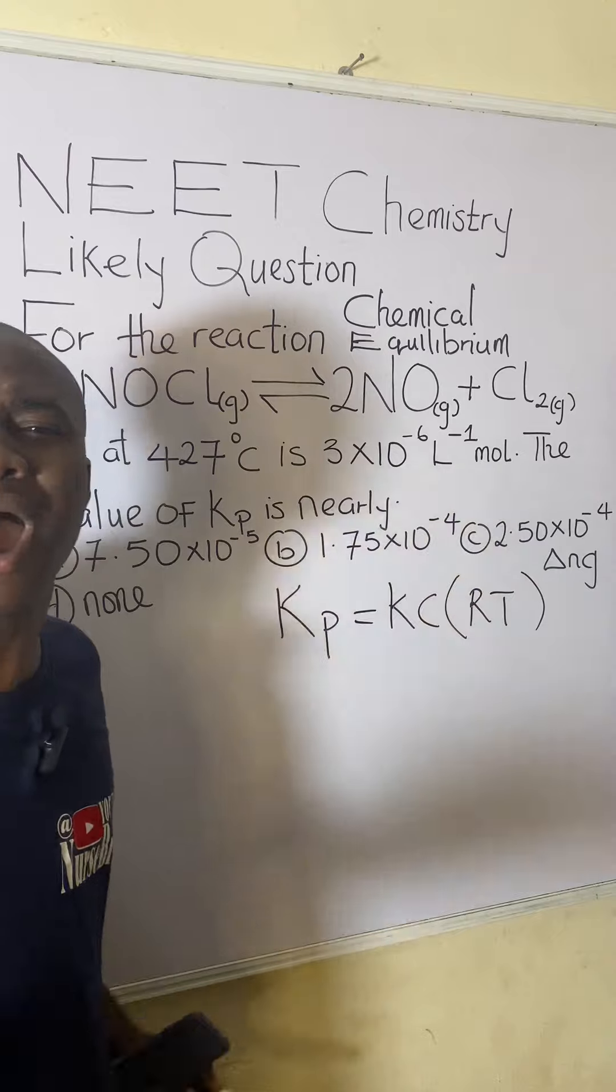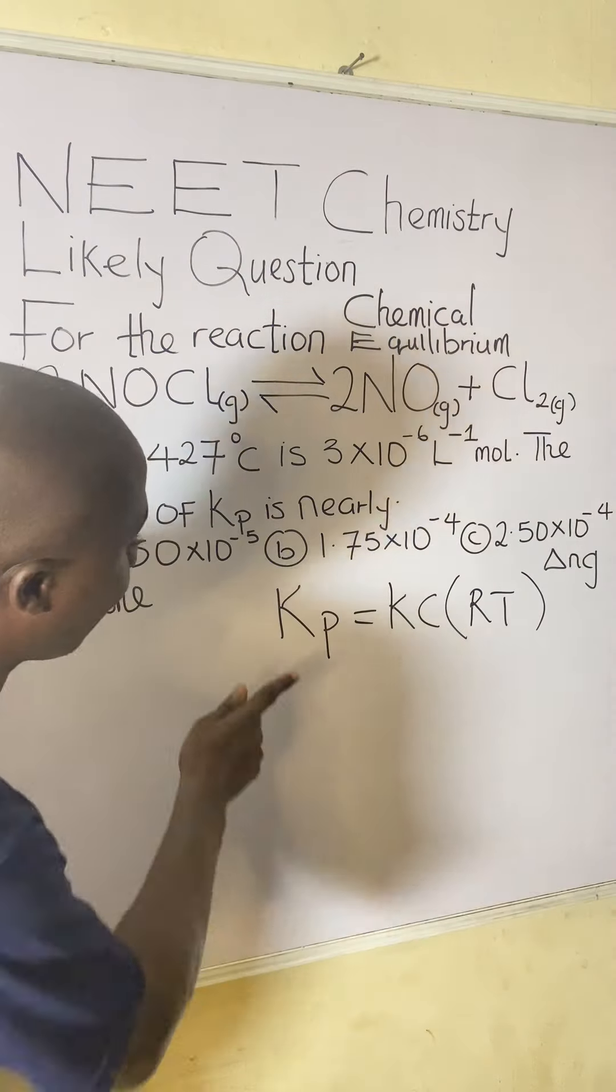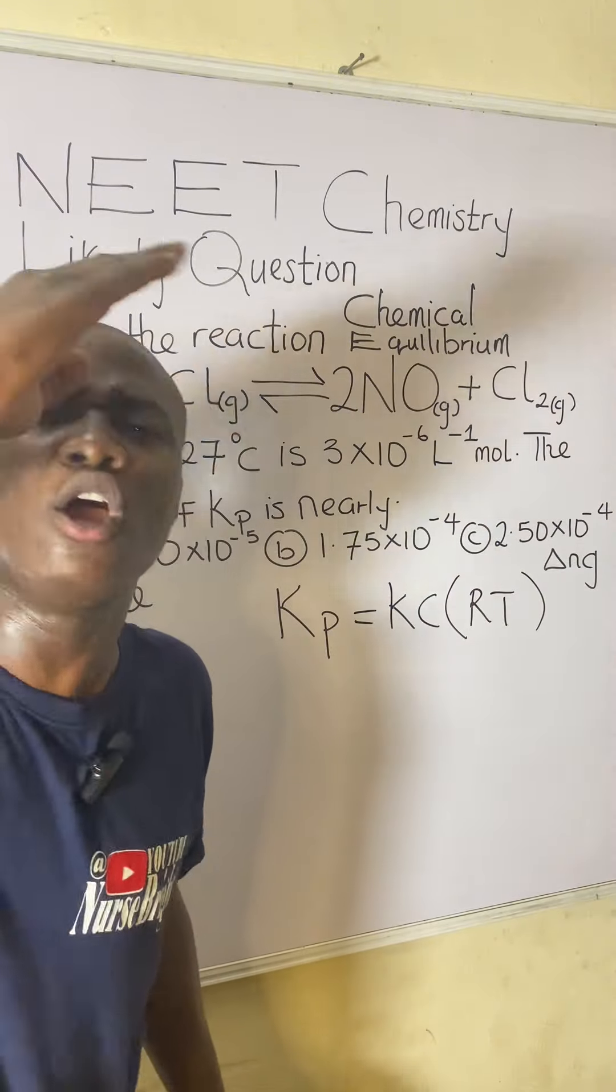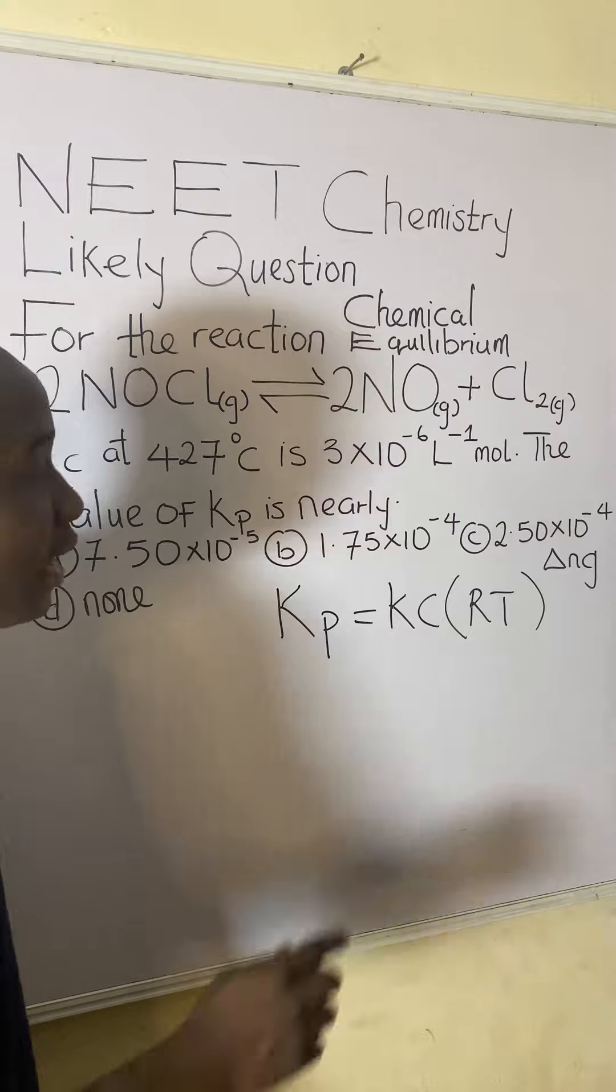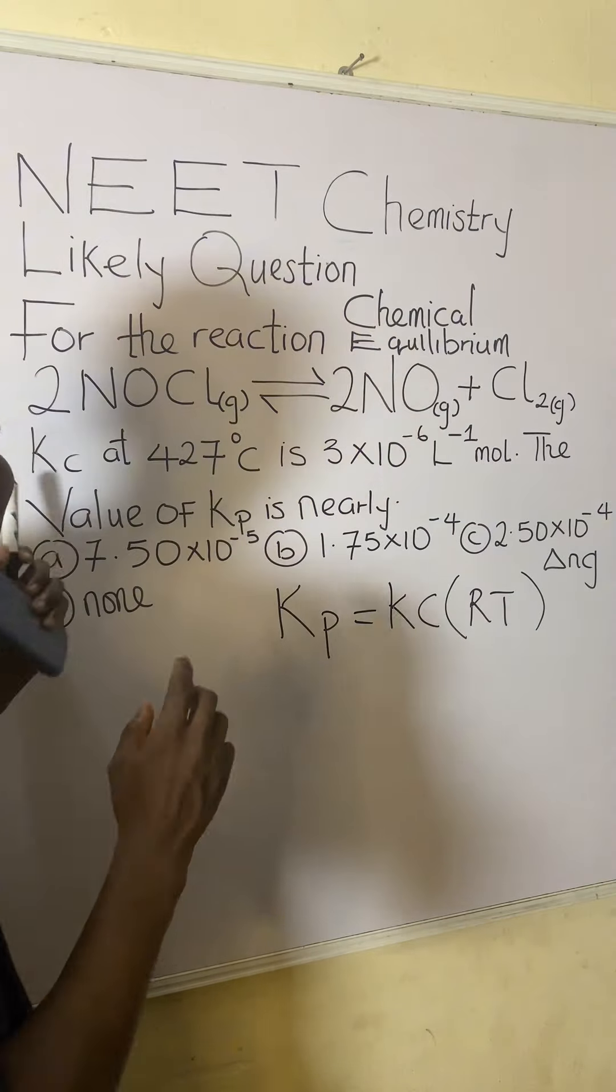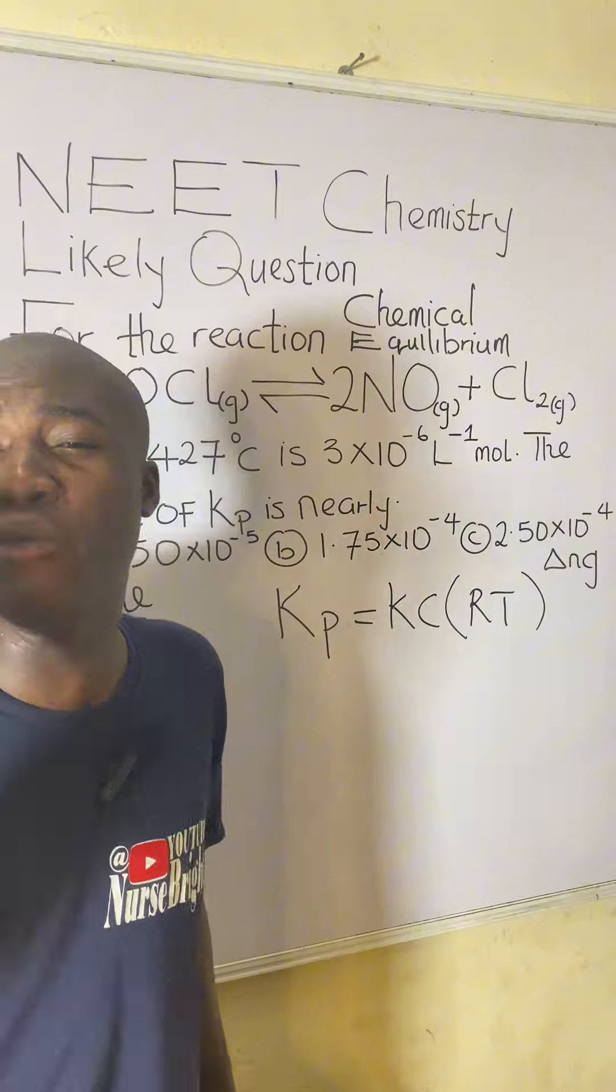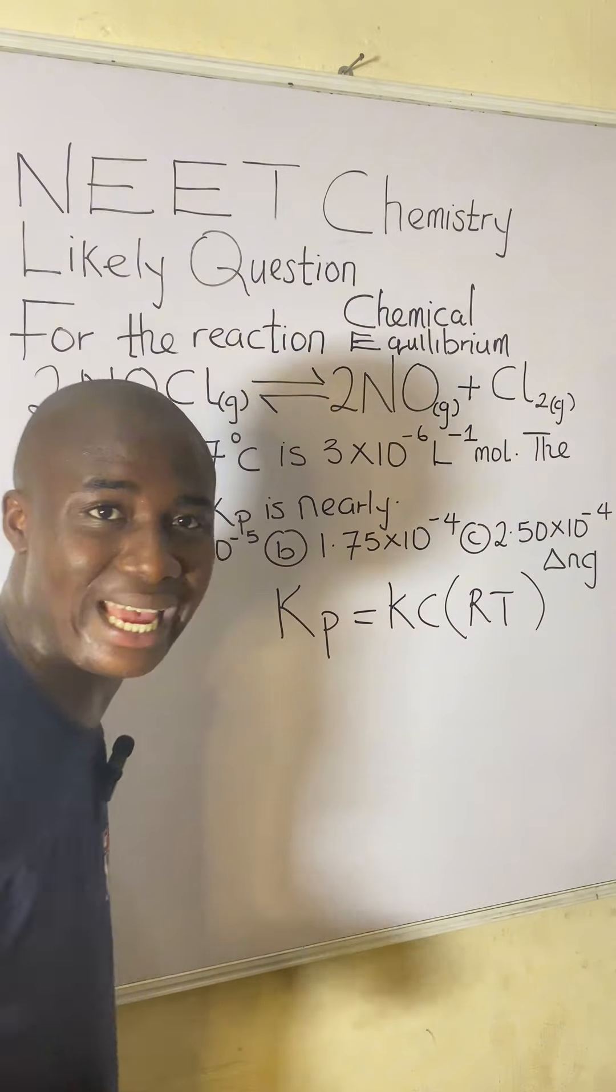So moving further, how do we solve this question? So we have to note what each of the parameters mean here. Kp here means equilibrium constant expression written in terms of pressure. I believe you can see P here. And Kc here means, I've said earlier that it means equilibrium constant expression written in terms of concentration. That's what C here means.